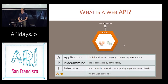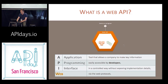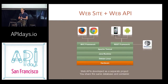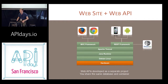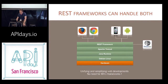In parallel, we saw the emergence of web APIs. A web API is a tool that allows a company to expose the same valuable key information — not to end users but to developers — in a controlled way without having to expose implementation details. It's really an interface to key information through the web protocol, typically HTTP.